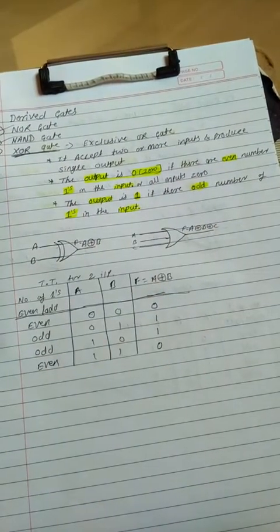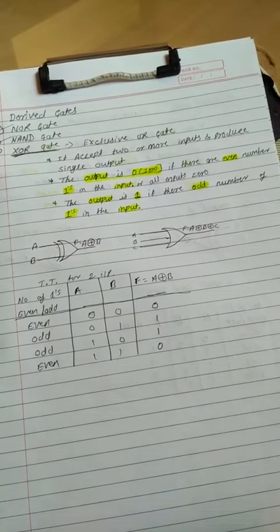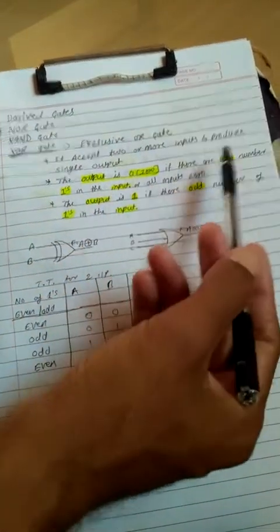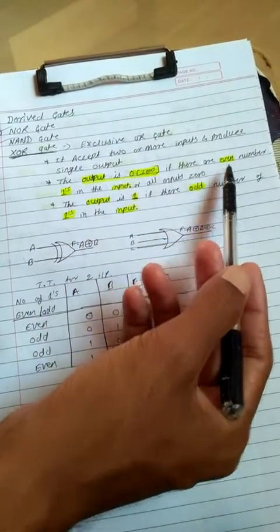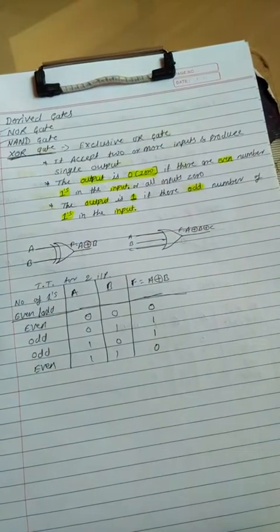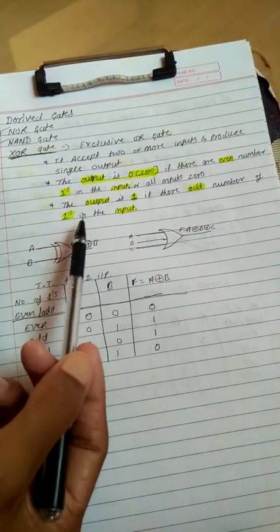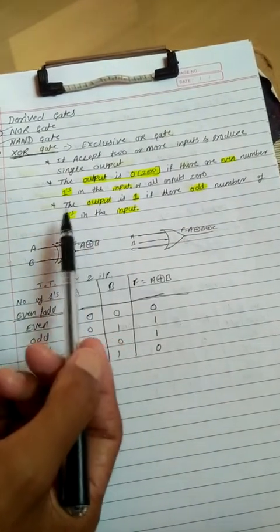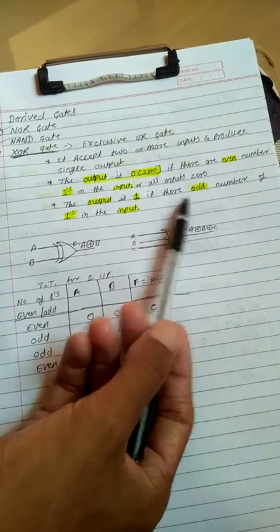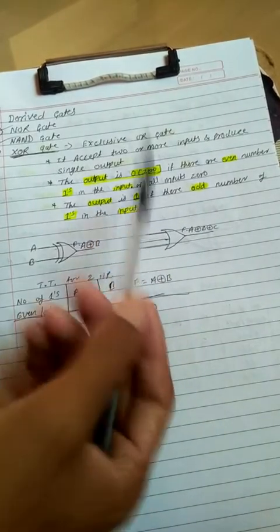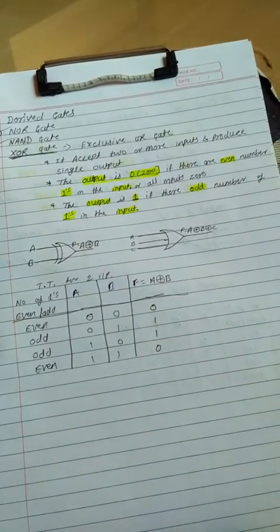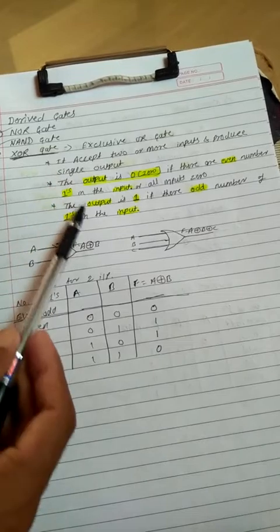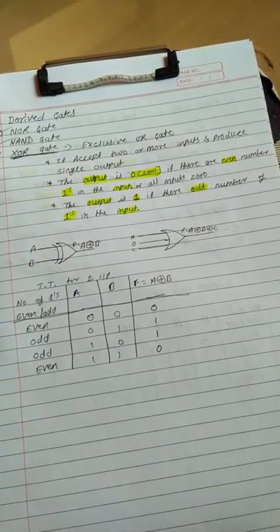Suppose you have taken one two times — that is, one and one. It becomes an even number of ones. In that case, output is zero. If we take one and zero, in that case one is an odd number, so output becomes one. This is the odd/even output rule of the XOR gate.